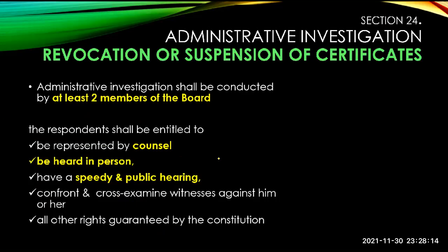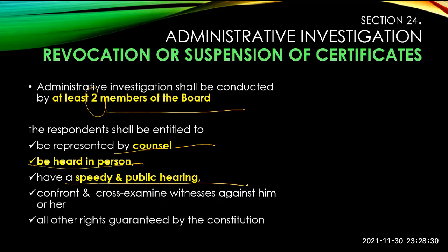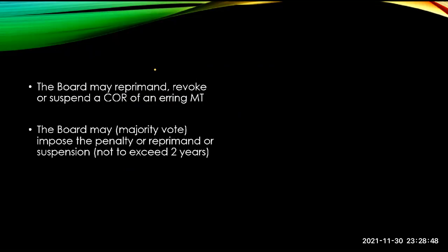Section on revocation or suspension of certificates: an administrative investigation shall be conducted by at least two members of the board, and the respondents shall be entitled to be represented by counsel, heard in person, and given a speedy public hearing, along with all other rights guaranteed by the constitution. The board may reprimand, revoke, or suspend the COR of a registered MT, and the board may by majority vote impose the penalty of suspension not to exceed three years.